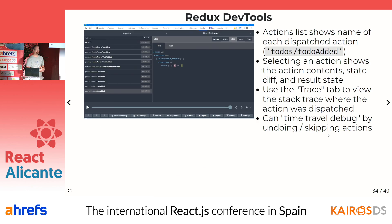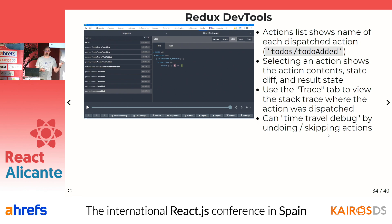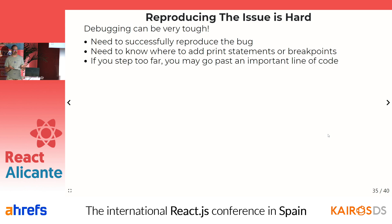Last bit — a quick demo. We said earlier that reproducing the issue is absolutely key: being able to say here are the steps to make it happen. That's critical for being able to know where to investigate and be able to fix it. But a lot of times you add some breakpoints, you get there, you pause, you're investigating, you step to the next line of code, and whoops — you just went one line too far. You hit F5, reload the page, start over. Or if you're adding console logs, you add five, realize it's not enough information, add ten more, reload, repeat, repeat.